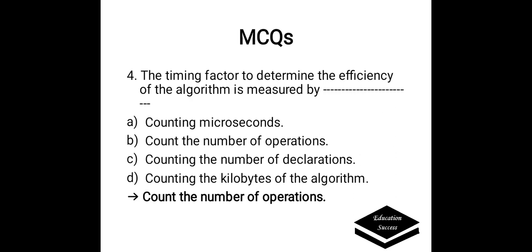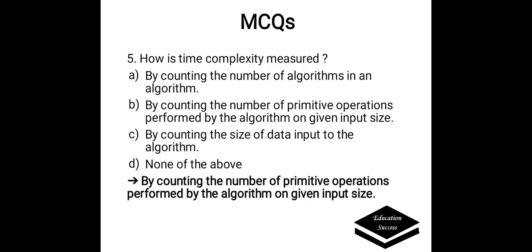How is time complexity measured? Options are: a) by counting the number of algorithms, b) by counting the number of primitive operations performed by the algorithm on given input size, c) by counting the size of data input, or d) none of the above. The correct answer is by counting the number of primitive operations performed by the algorithm on given input size.